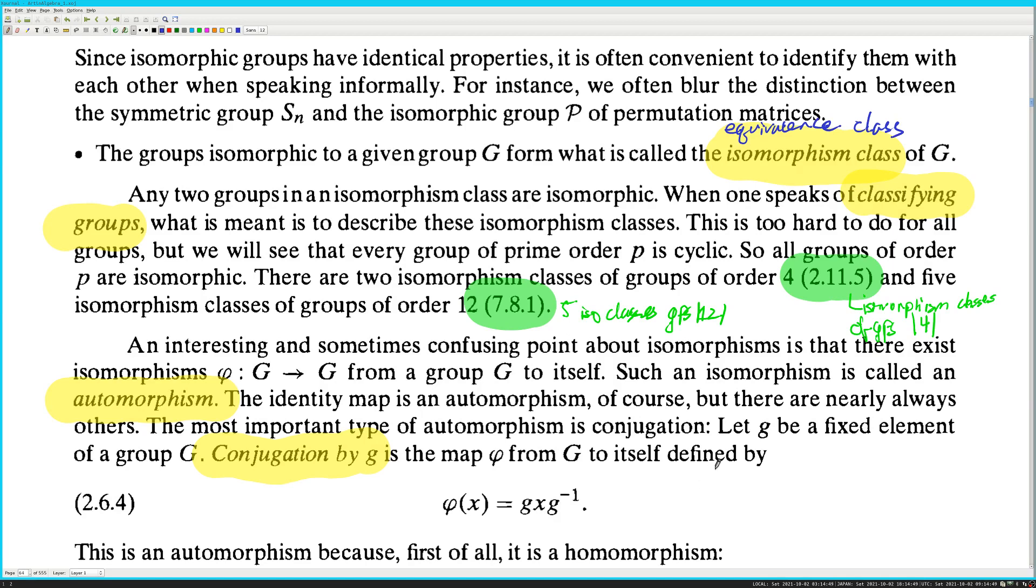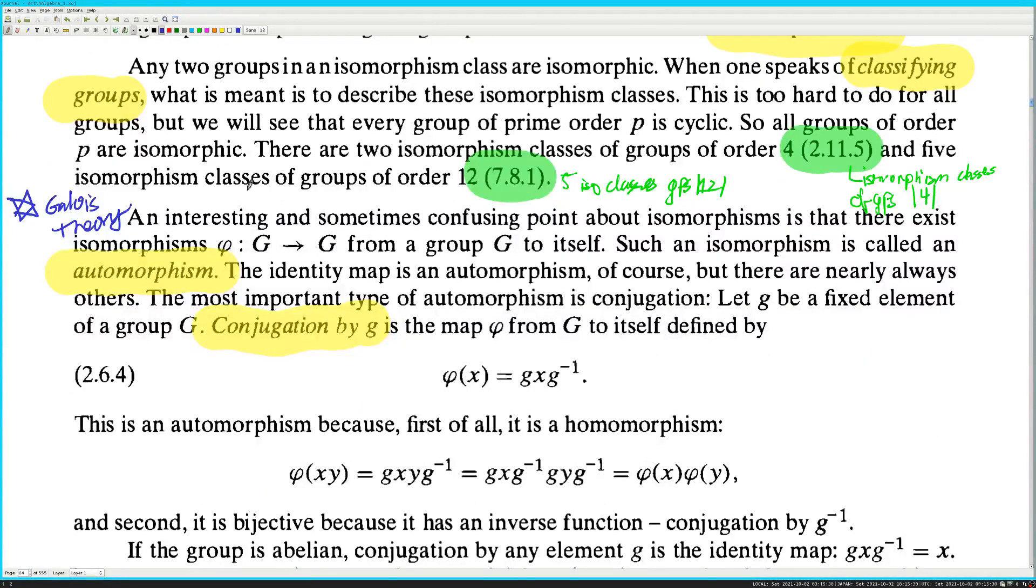This is too hard to do for all groups, but we will see that every group of prime order P is cyclic. So all groups of order P are isomorphic for a fixed P. There are two isomorphism classes of groups of order 4 and five groups of isomorphism classes of order 12. An interesting and sometimes confusing point about isomorphisms is that there exist isomorphisms from G to G from a group G to itself. This is important. And this is the heart of Galois theory is automorphism groups. So Galois theory, which is, I think, chapter 16. Such an isomorphism is called an automorphism.